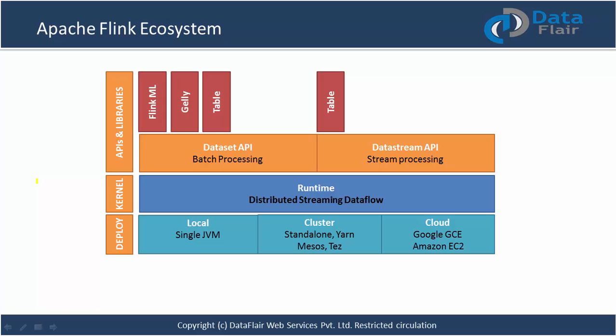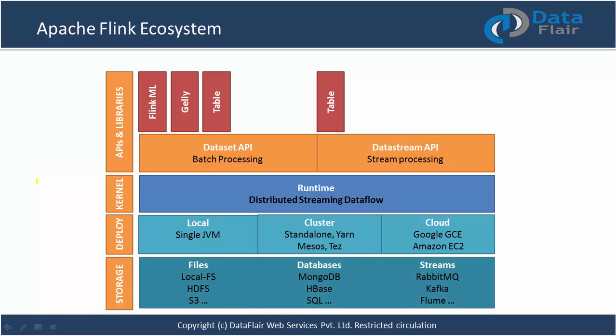The deployment layer of Flink allows it to run on a local machine in a single JVM, which is useful for testing, R&D, and development. Flink can also be deployed on a cluster in standalone, YARN, or Mesos mode, or directly on cloud platforms like Amazon EC2 or Google Compute Engine. For storage, Flink can read and write data from local file systems, HDFS, S3, as well as databases like MongoDB, HBase, Cassandra, and SQL databases.